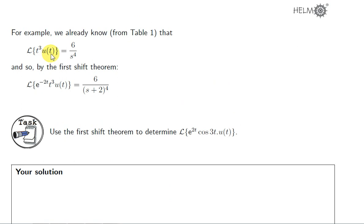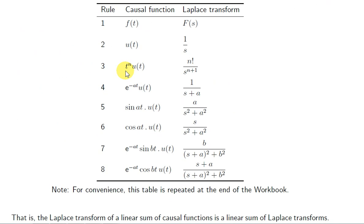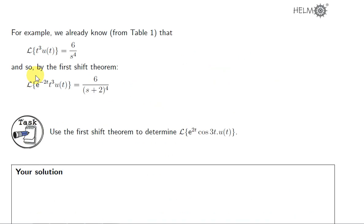Let's take this example. We can look up the Laplace transform of t cubed using the table. We see that L{t^n} = n! / s^(n+1). So if n is 3, this becomes 3! / s^4, and 3! is 6. This means that if we want to work out something more complicated, like L{e^(-2t)·t³}, we can use the first shift theorem.